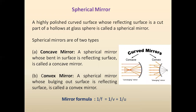The most important thing is the mirror formula, that is 1 by f, where f is the focal length, is equal to 1 by v plus 1 by u. Here, u is the object distance from the mirror and v is the image distance from the mirror. Thank you.